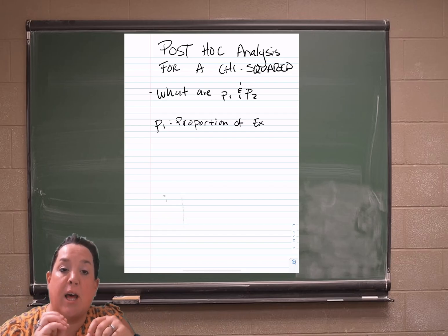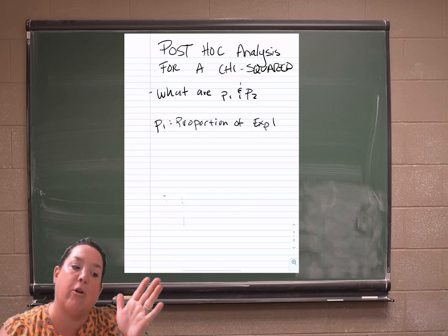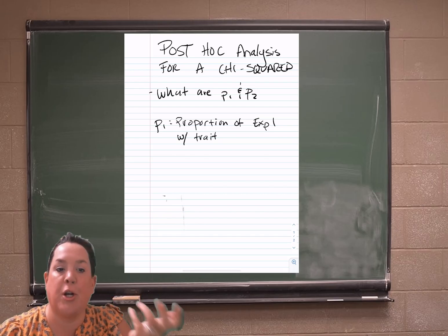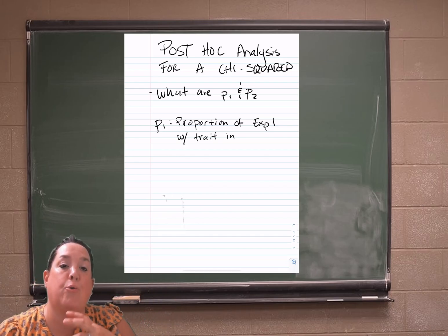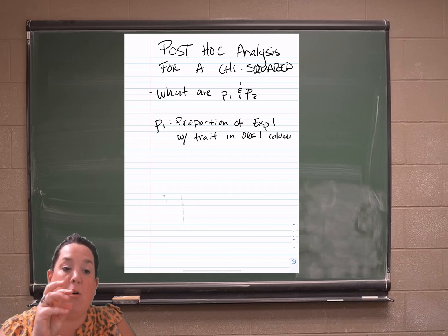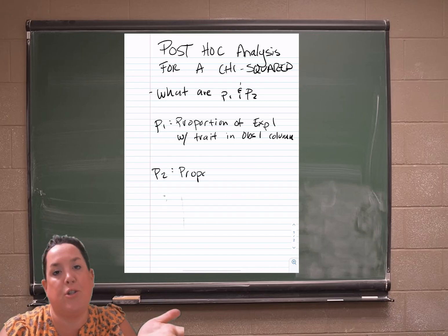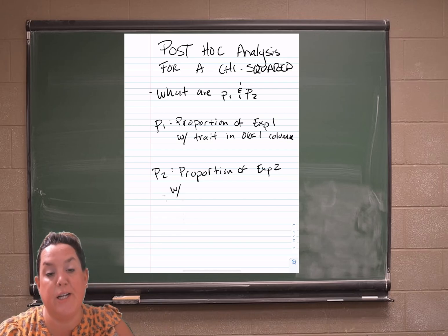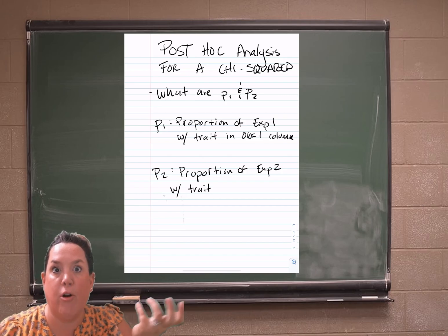And then p sub two would be the exact same thing. You would just change and instead of saying dog, you would say the other explanatory variable option, which would maybe be cats. So proportion of cats who are kind to strangers. So those are how you would compare or write out the two parameter definitions. You would do that before you did the interpretation. So you would actually write p1 and p2. You would write these sentences like I've just stated.